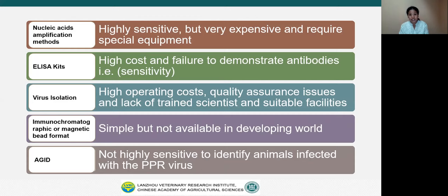Nucleic acid amplification methods are highly sensitive but very expensive and require special equipment to operate. Similarly, commercial ELISA kits are expensive and have low sensitivity. Virus isolation methods have high operating costs, issues of quality assurance, and require trained scientists and suitable facilities. Immunochromatographic or magnetic bead format tests are simple but not available in the developing world. Agar gel immunodiffusion test is not highly sensitive to identify animals infected with PPR virus.